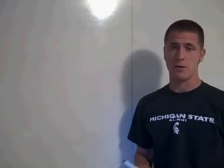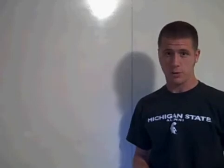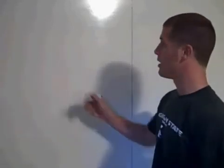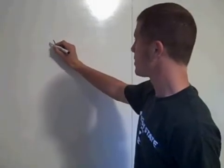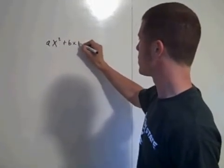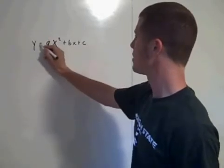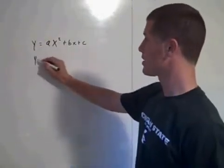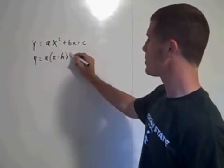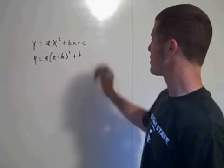I'll call this completing the square part 2. How can we use completing the square to write a quadratic equation given in standard form into vertex form? So how can we write something like ax squared plus bx plus c and rewrite it so it looks like y equals a times x minus h squared plus k?